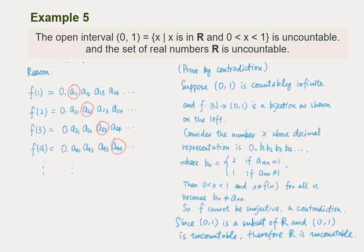Therefore, the open interval (0, 1) is uncountable. Since this open interval is a subset of the set of real numbers, therefore the set of real numbers R is also uncountable. From this example, we notice that the set of irrational numbers is uncountable, meaning that there are far more irrational numbers than rational numbers.